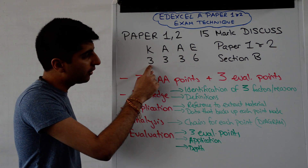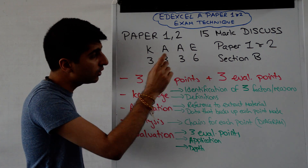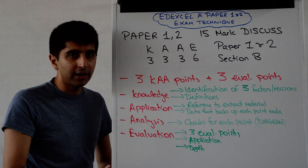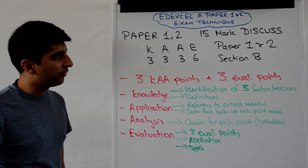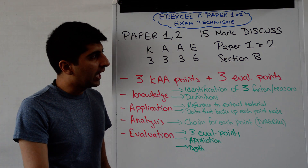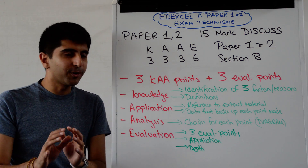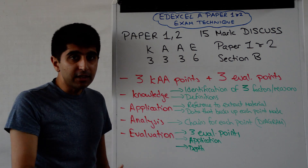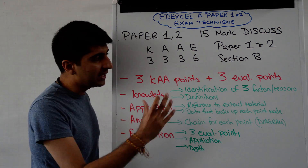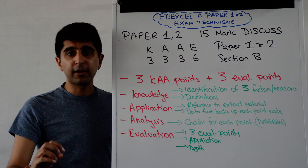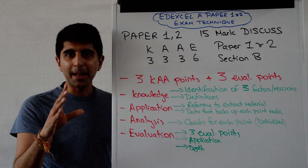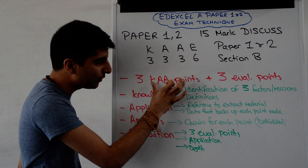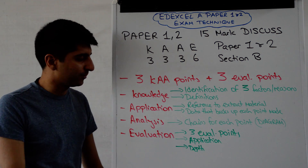It's broken down with 3 marks for knowledge, 3 marks for application, 3 marks for analysis, and 6 marks for evaluation. So you can see that evaluation is weighted quite heavily on this question. It's a very simple question that comes in section B of paper 1 and in paper 2. All you need are 3 KAA points and 3 evaluation points — 3 solid paragraphs and you'll be absolutely banging in your exam. That's all you need to do.